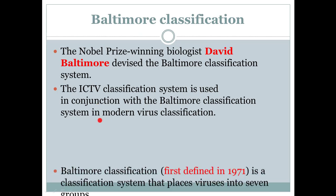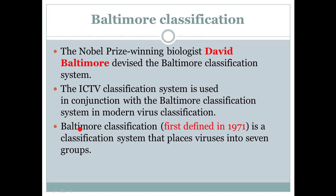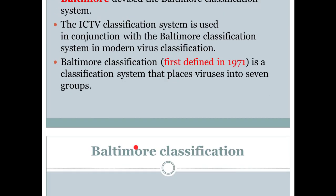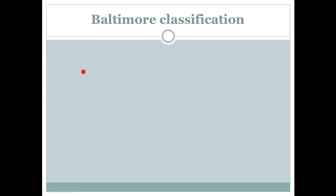The next point regarding Baltimore Classification is that it was first defined in 1971. It is a classification system that places viruses into seven groups. Baltimore Classification, first described in 1971, divides viruses into seven groups. Let's now look at those seven groups.